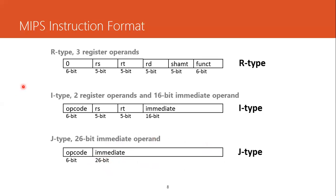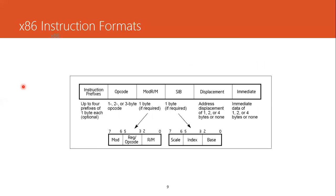One more important thing about the MIPS instruction format is that these processors are based on RISC — Reduced Instruction Set Computer. RISC-based processor instructions are very primitive and simple, like add, subtract, and multiply. Even multiplication in some architectures is considered a complex instruction. In contrast, we have the x86 instruction format, which is based on CISC processors.